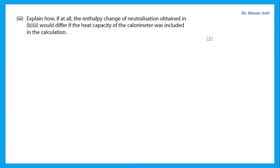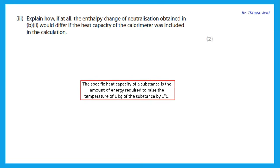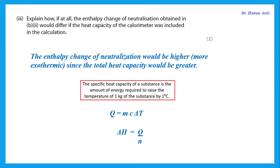Explain how, if at all, the enthalpy change of neutralization would differ if the heat capacity of the calorimeter was included. We use the specific heat capacity of water (4.2 J g⁻¹ °C⁻¹) and do not include the heat capacity of the calorimeter. The heat capacity is the amount of energy needed to raise the temperature of a substance by one degree Celsius. If we include the heat capacity of the calorimeter, C increases, Q increases, and delta H would be larger in magnitude — more exothermic.